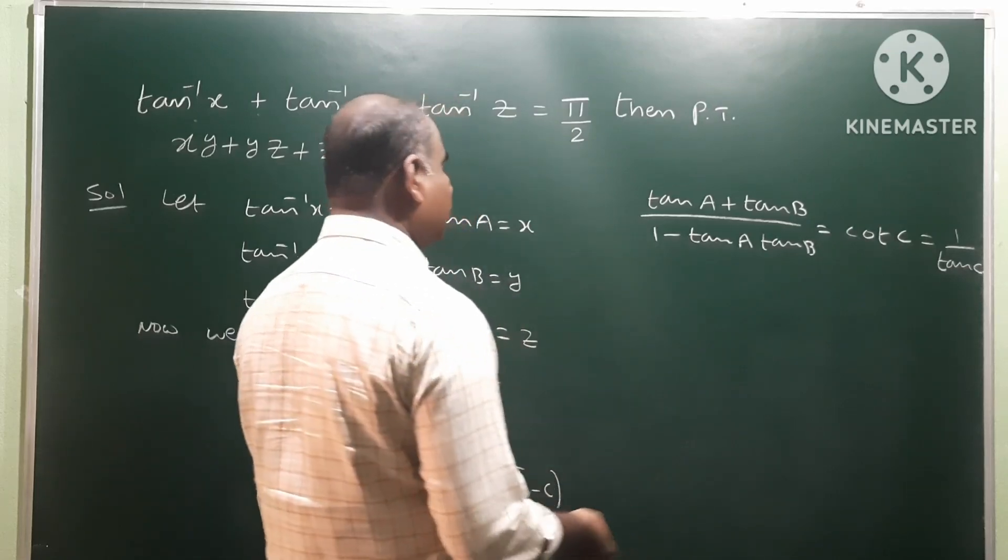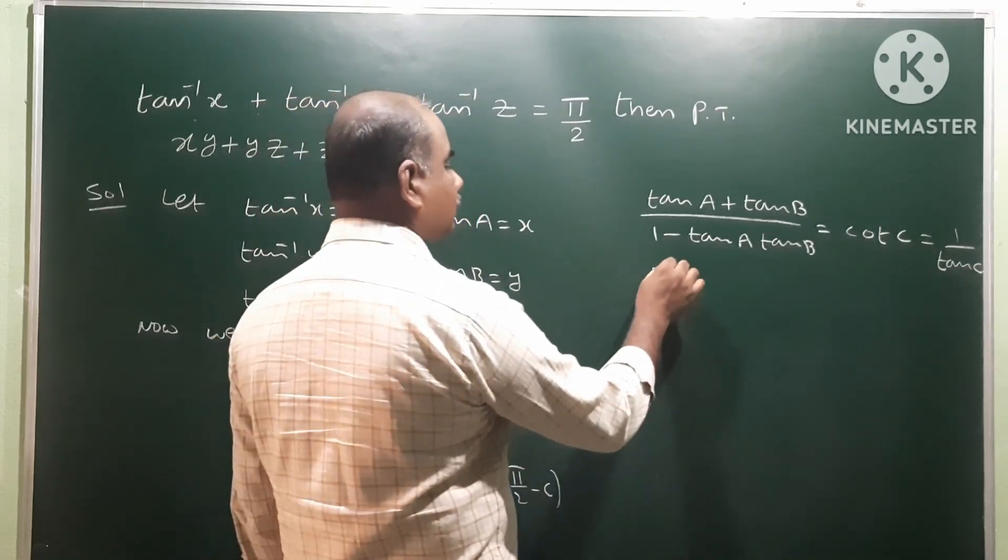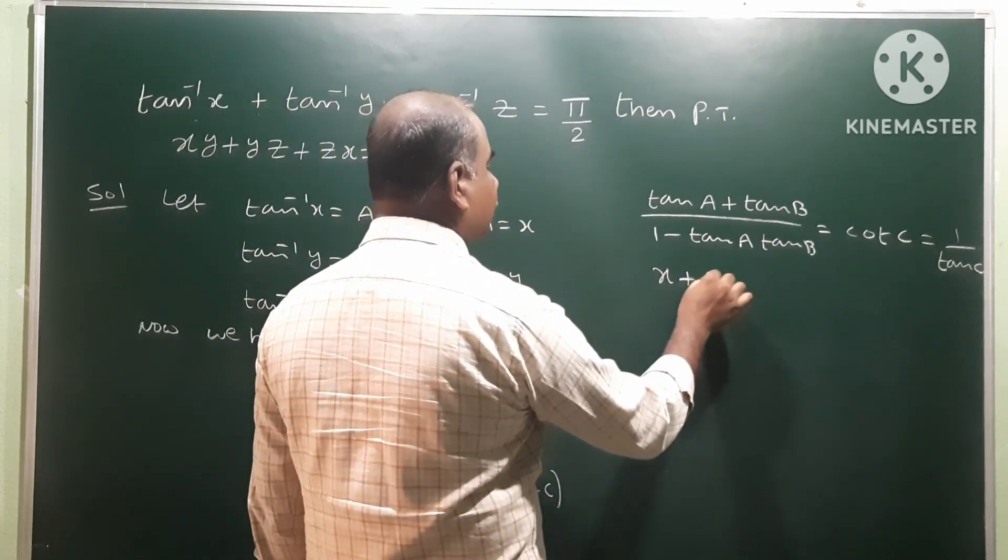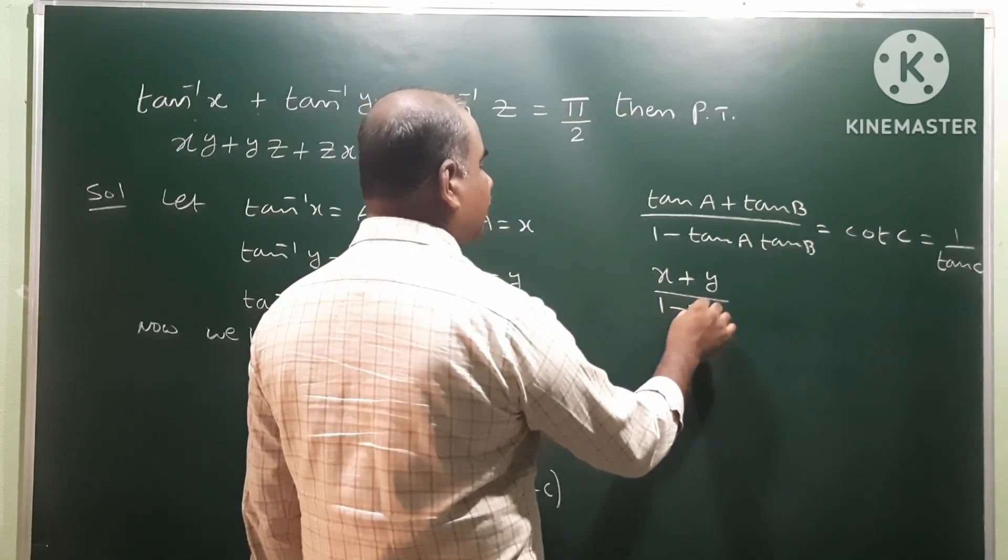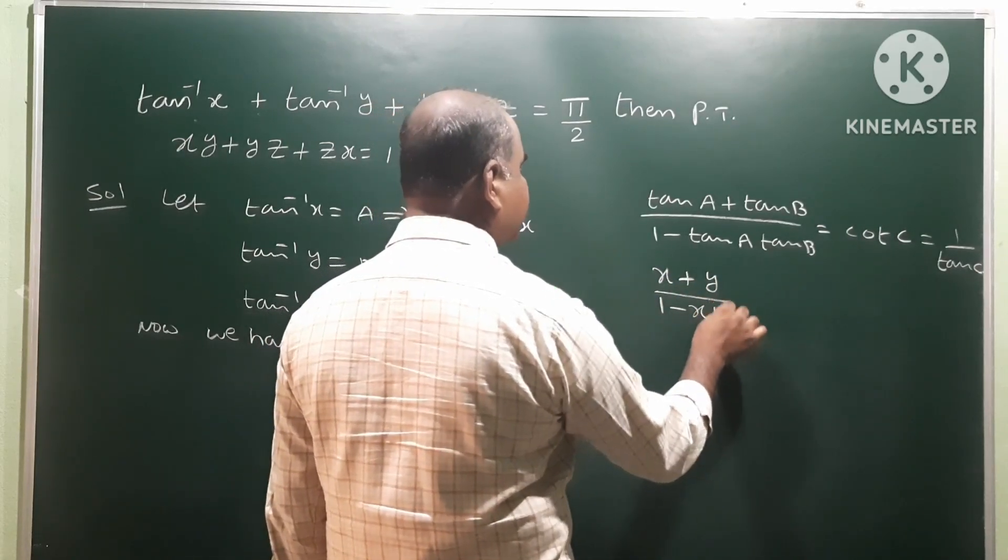Now, substitute all the values. Tan a means x, tan b means y by 1 minus tan a means x, tan b means y.